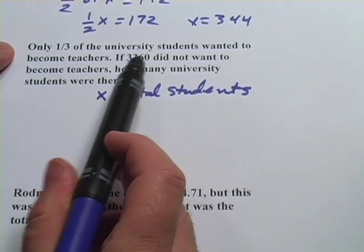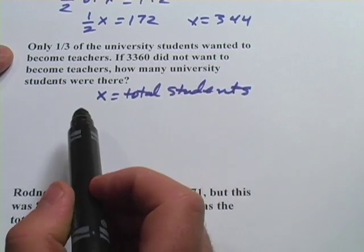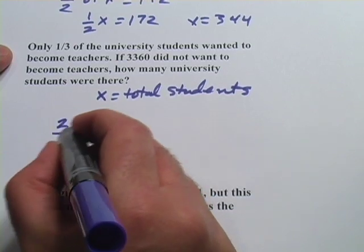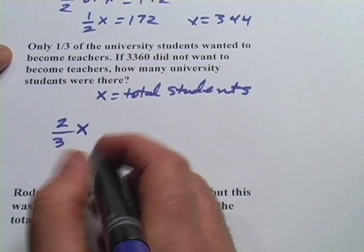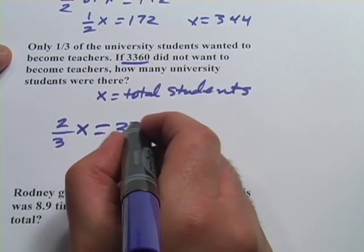And it says one third of university students wanted to become teachers, and then they tell us how many did not want to. Well if one third did, that means two thirds did not. So two thirds of this total number, x, did not want to become teachers, and that number they're telling us is 3360.